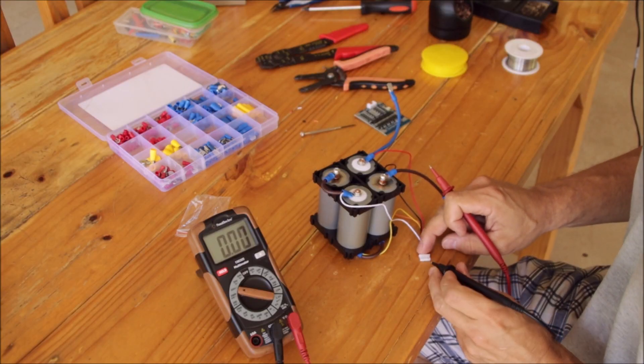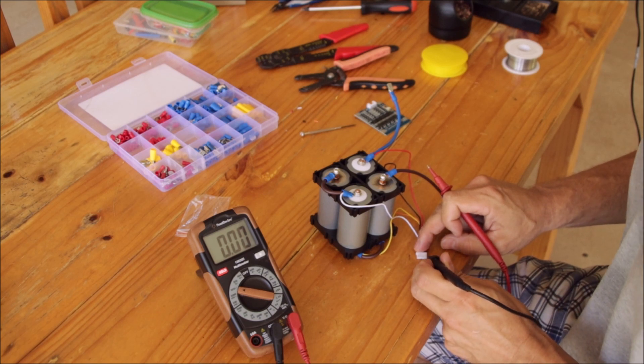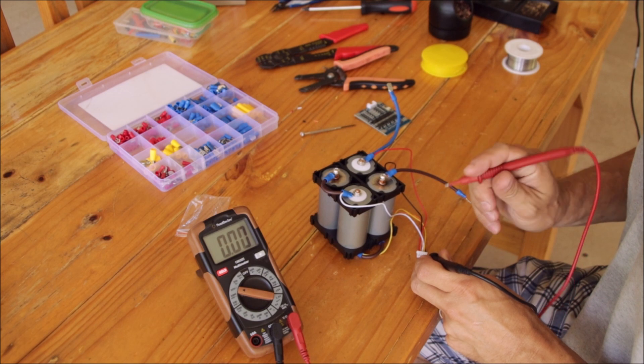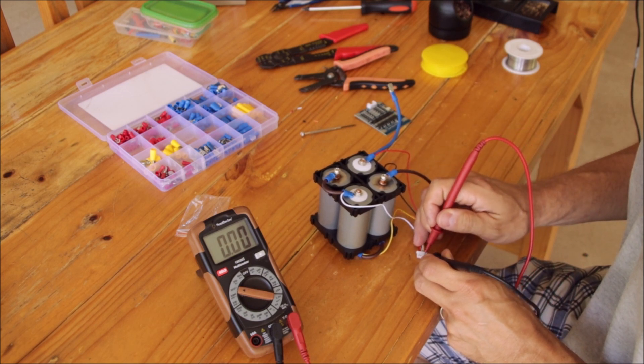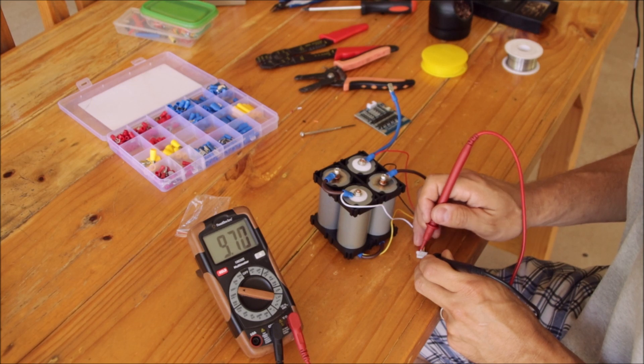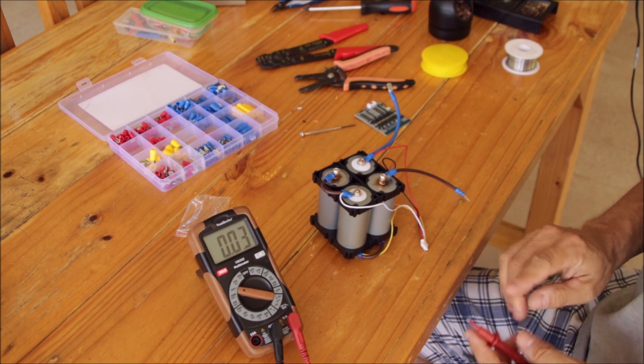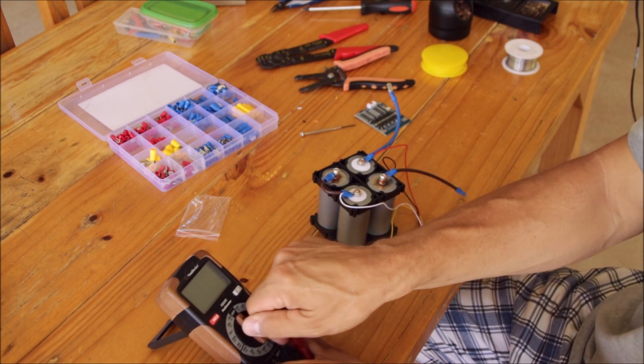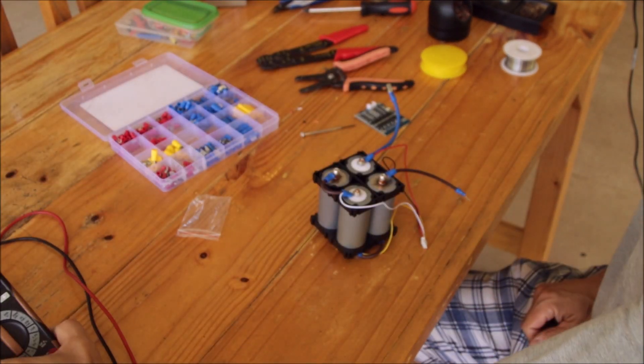We are now going to check the individual voltage on our balance connector to see if everything is correct. So the first cell must have the 3.2, is correct. Second position, 6.4, correct. And then next one, 9.7, is also correct. And the total, 12.9. So the connections to the balance leads are correct.